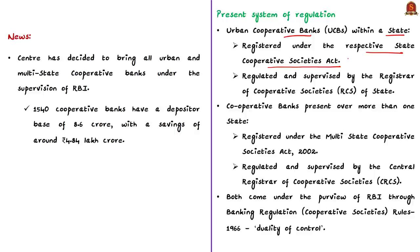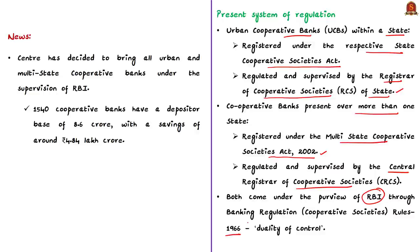If a cooperative bank has presence over more than one state, it is registered under the Multi-State Cooperative Societies Act of 2002. Urban cooperative banks that function within a state are regulated and supervised by the Registrar of Cooperative Societies of the state government. In case of multi-state cooperative banks, it is done by the Central Registrar of Cooperative Societies. Apart from this, both these banks also come under the purview of the Reserve Bank of India through the Banking Regulation Cooperative Societies Rules of 1966, meaning cooperative banks are actually under duality of control. We have elaborately discussed this in our 6th February 2020 Hindu News Analysis.